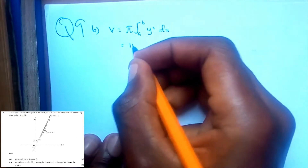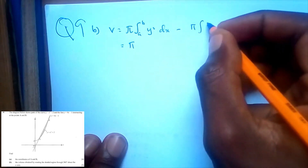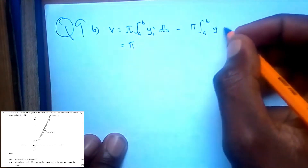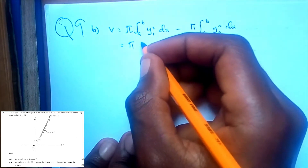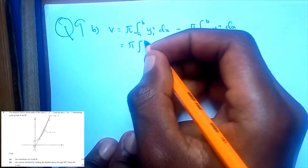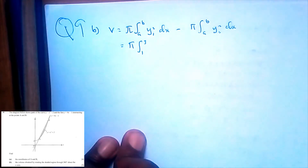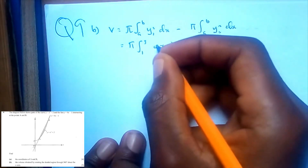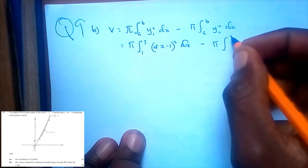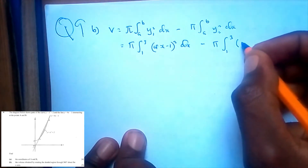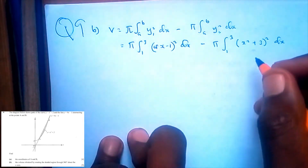Since there are two equations, there will be two integrals. The volume is pi times the integral from 1 to 3 of the top equation, which is 4x minus 1, squared dx, minus pi times the integral from 1 to 3 of x squared plus 2, squared dx.